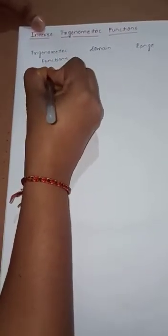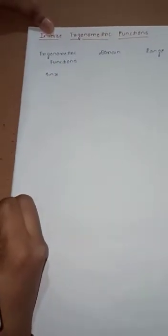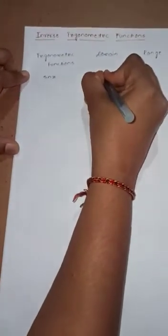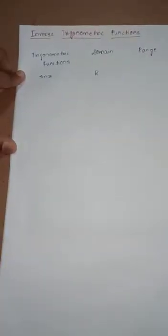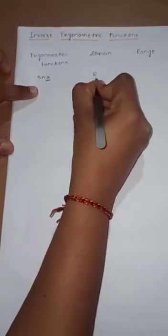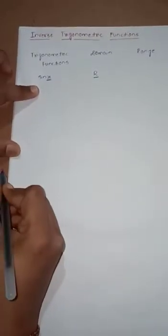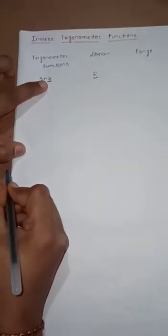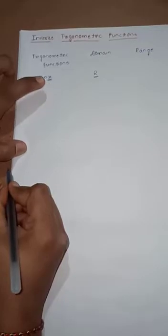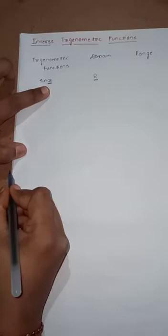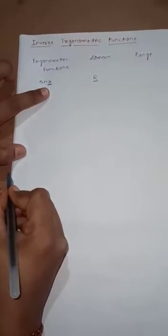The first trigonometric function is sin x. As you know, f is a function from the set of all real numbers to the set of all real numbers. Therefore, the domain for the sine function is the set of all real numbers — that is, all x values taken from ℝ. Now substituting values: sin 0° = 0, and sin 30° = sin(π/6) = 1/2.